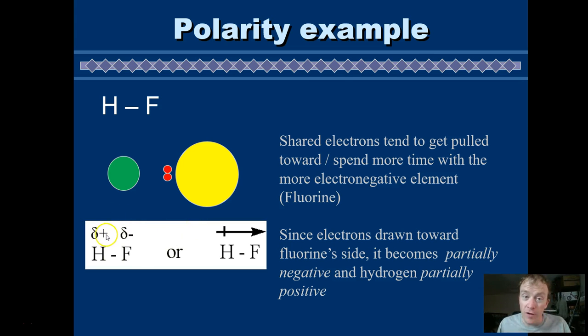You need to make this kind of funny-looking delta here with a plus and another one with a minus. Then it gets partial positive or partial negative charge. Or one of these little vector arrows, where this is supposed to look kind of like a plus sign. And we point the arrow towards the place where the electrons are tending to drift to.